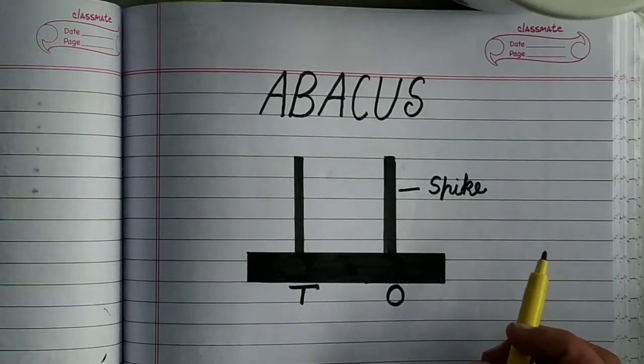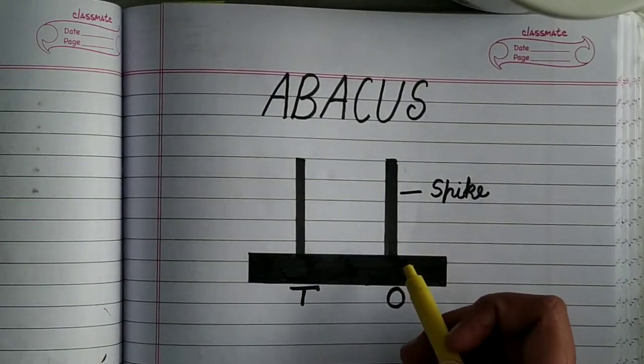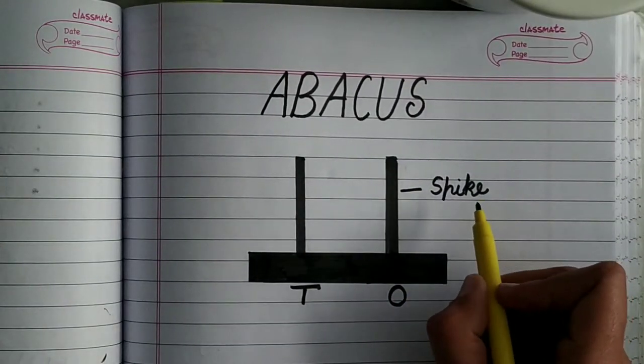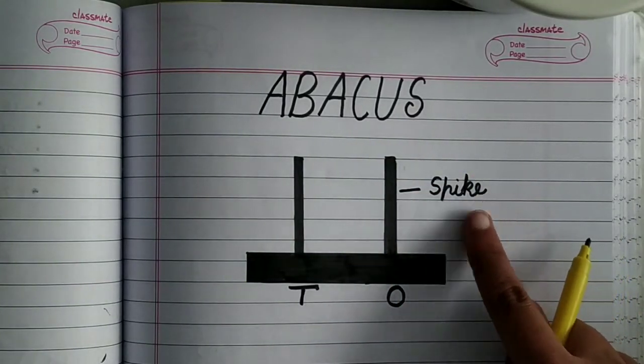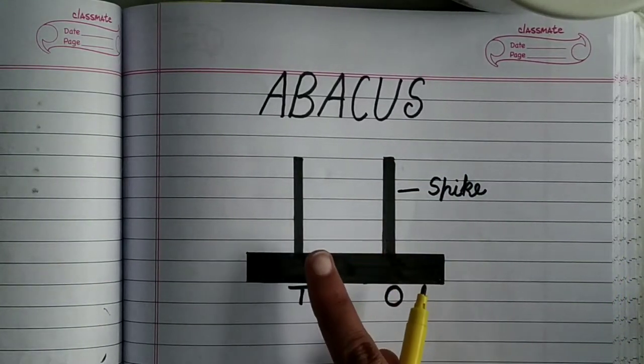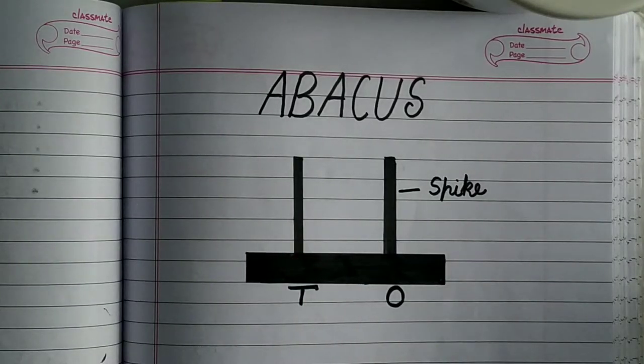So when I ask you that what are these rods known as? So these are known as spike. So in this Abacus, how many spikes are there? One and two. So two spikes are there.